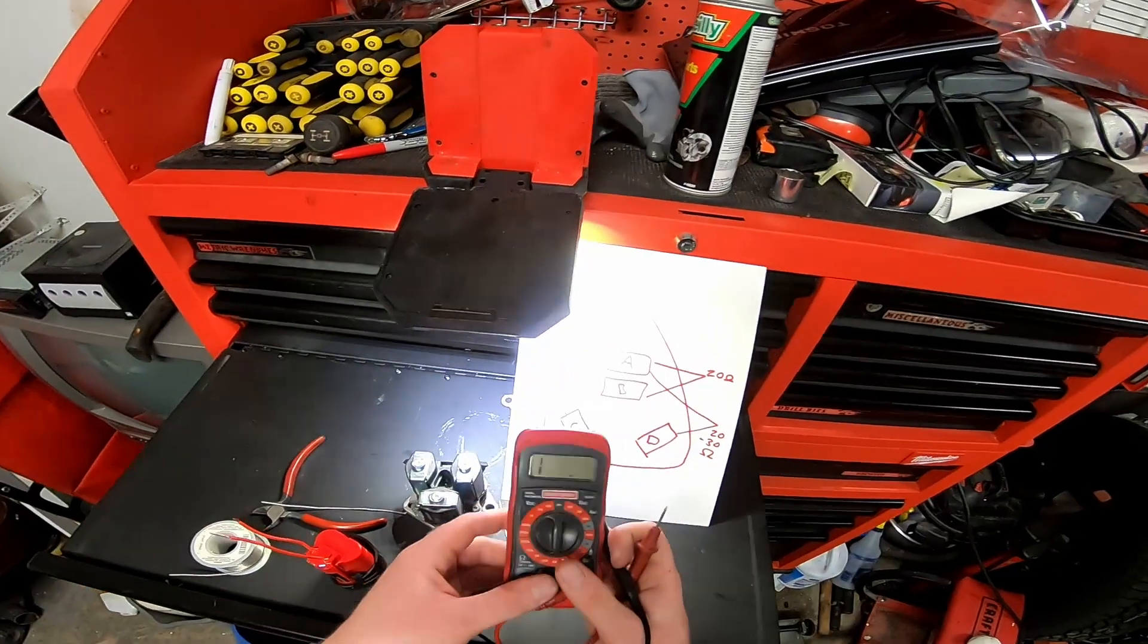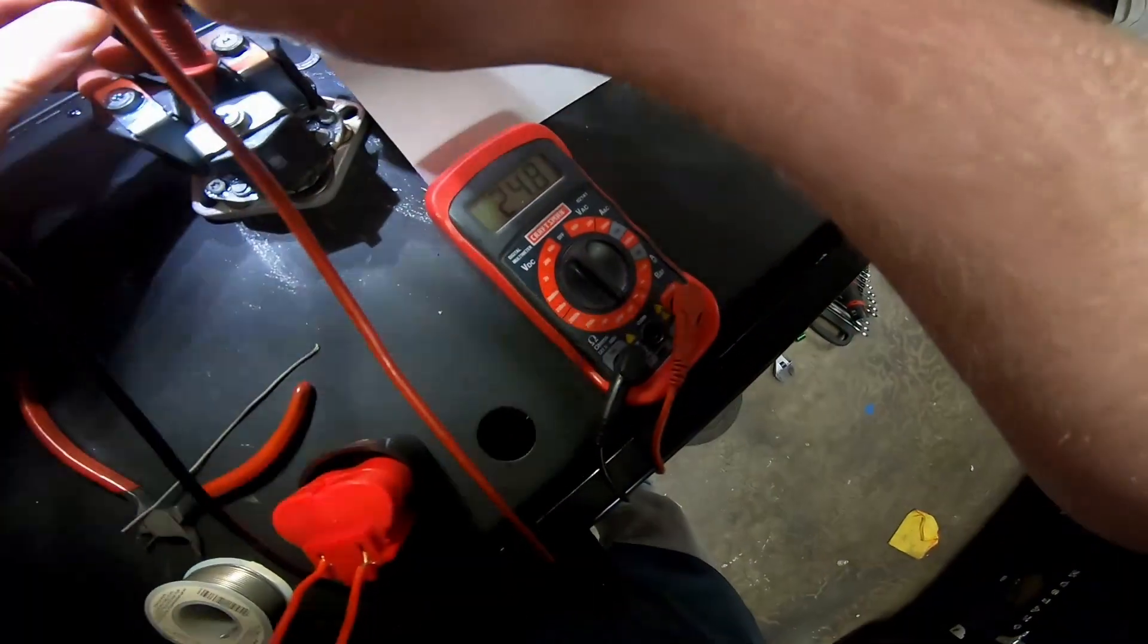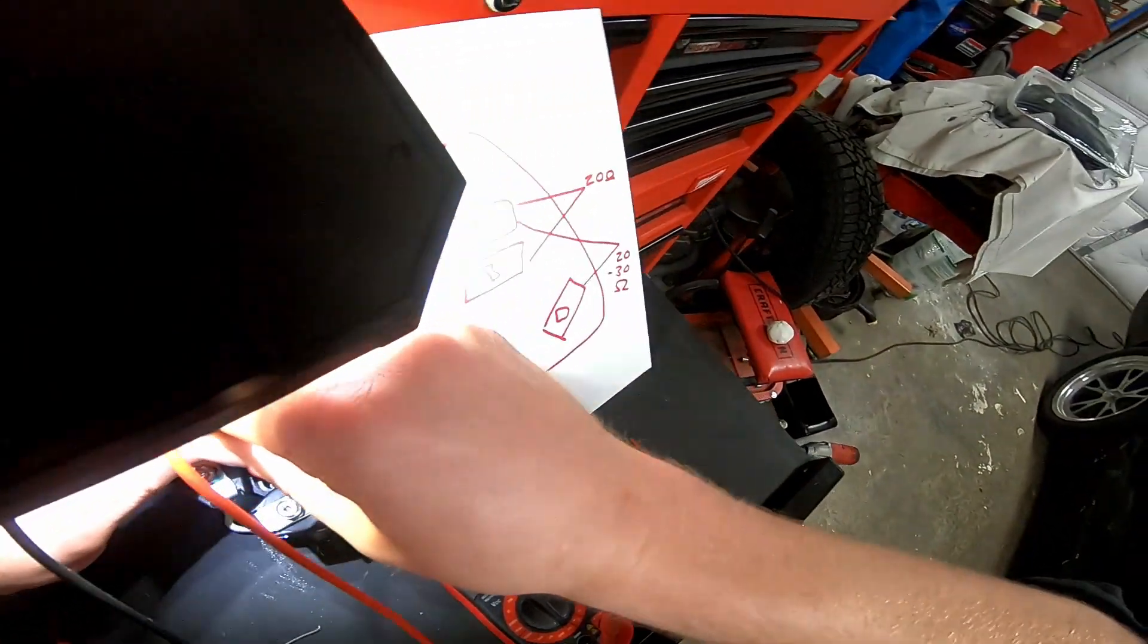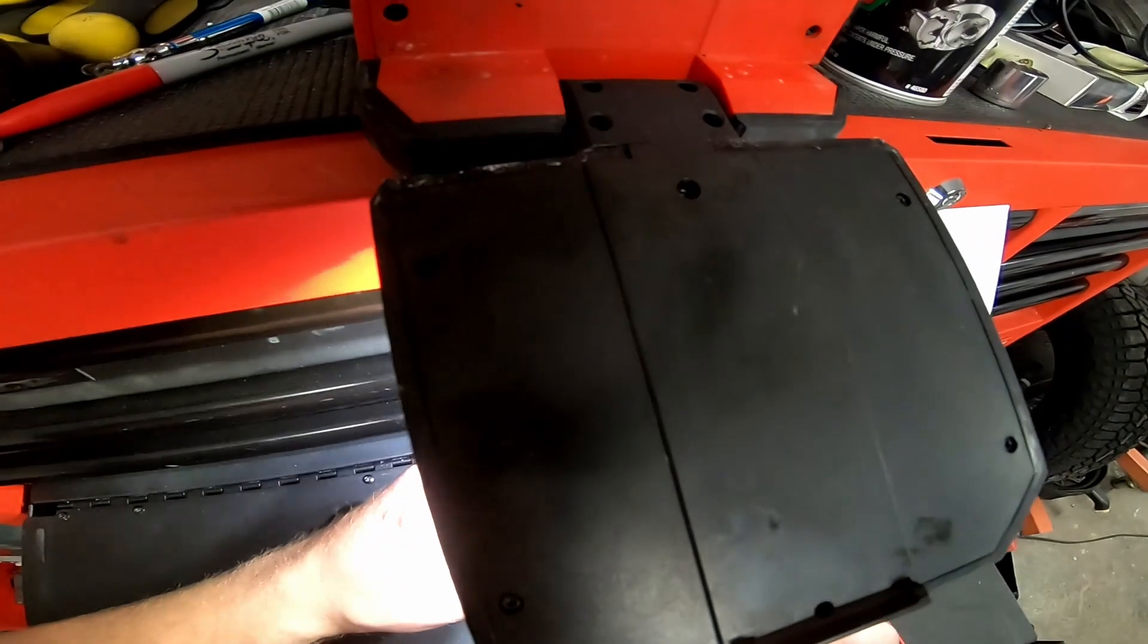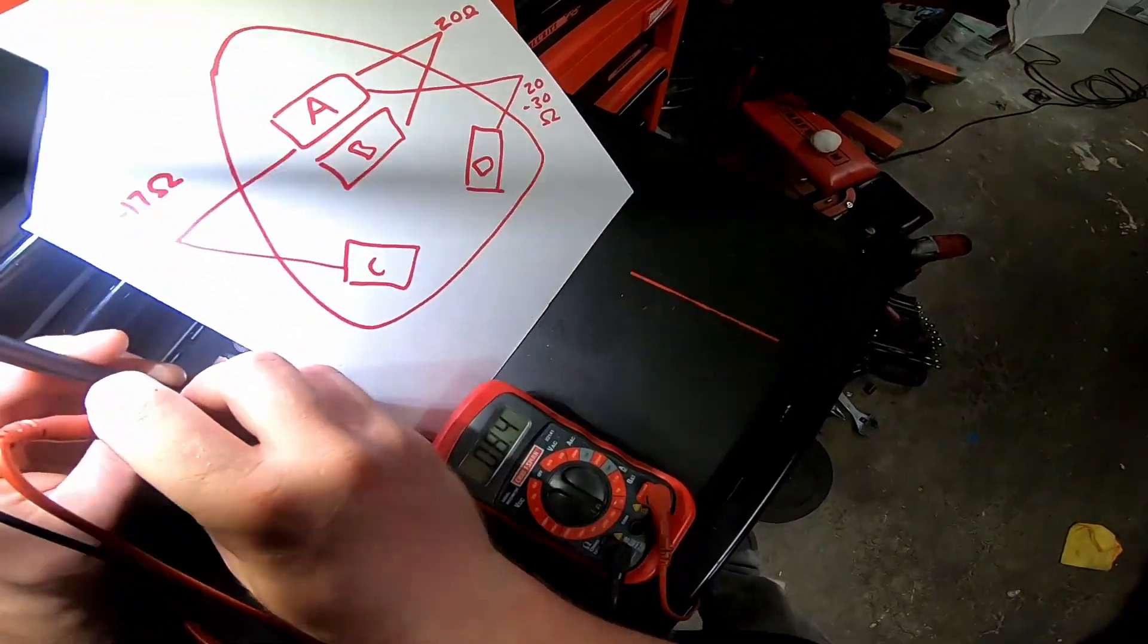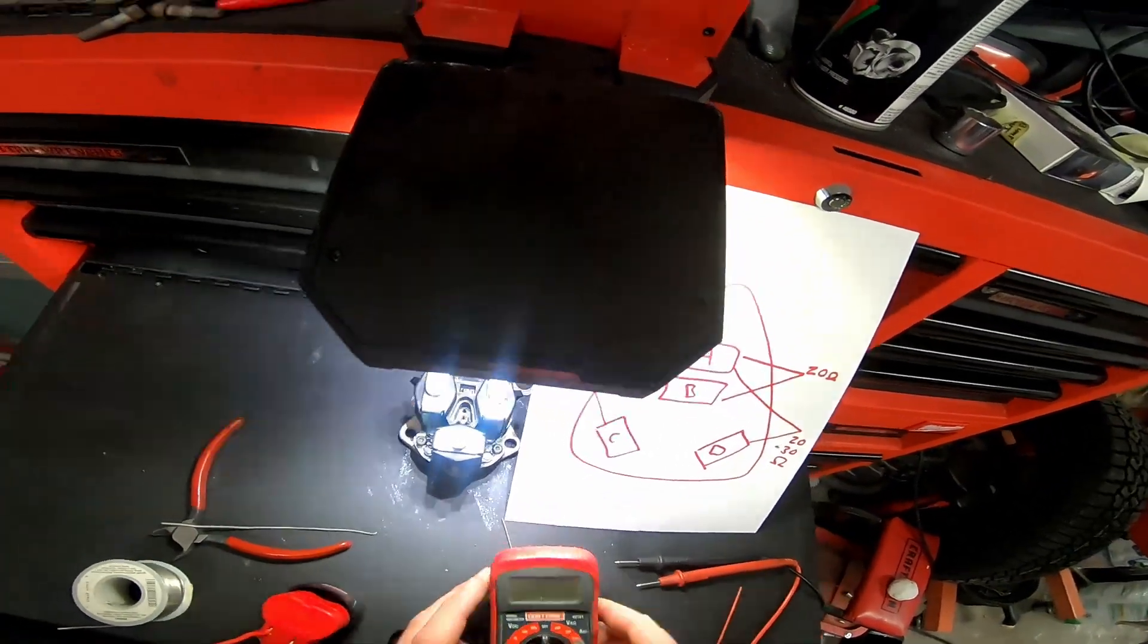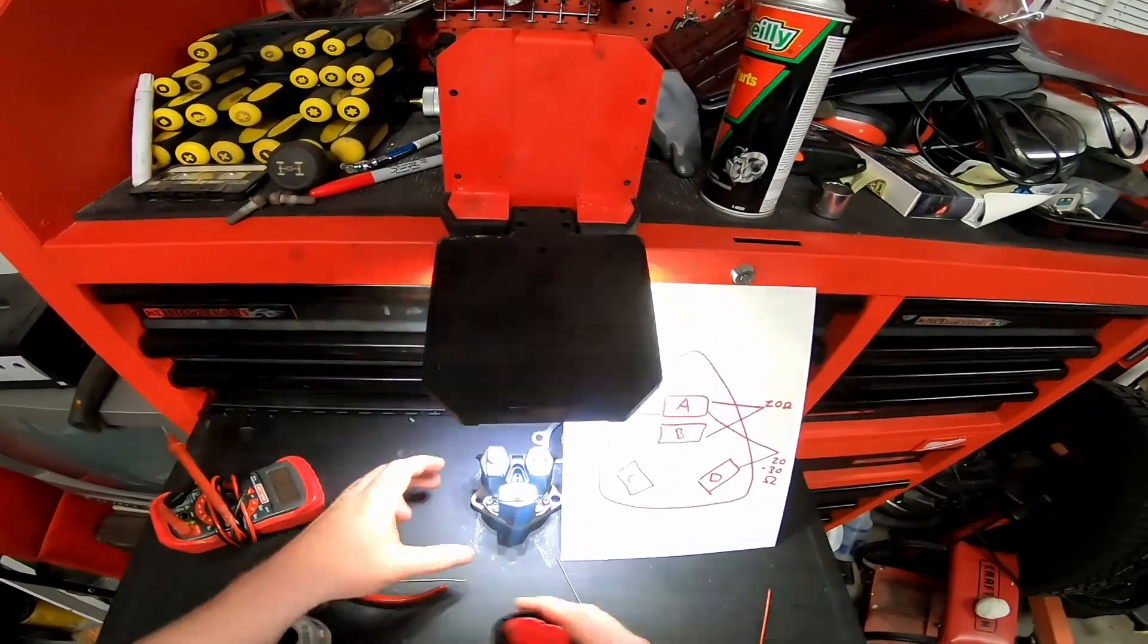I'm going to put it on the low scale here, the ohmmeter. All right, so from A to B, we're at 24 ohms. So that's no good. From A to D, we're at 23 ohms. So that one's good. And from A to C, we're at 12.7 ohms. So it passed that test, but it failed on one of those. One of the resistances came back bad from A to B, it's a little high.